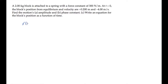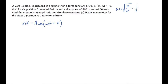A standard form for the position of an object in simple harmonic motion is A times cosine(ωt + φ). We can find the angular frequency ω straight away because it equals the square root of k over m, the spring constant over the mass. Substituting those values shows us that ω is 12.25 radians per second.